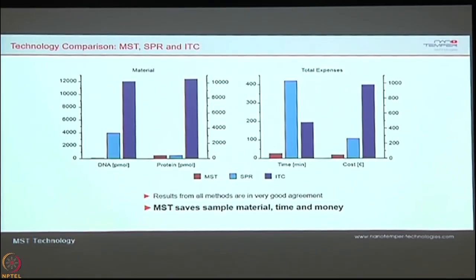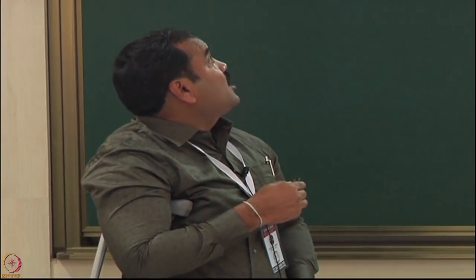The biggest advantage over SPR — where you need a chip, immobilize one protein, pump different buffers and ligands, and invest in method development and cost per assay — and over ITC — which requires higher sample volumes — is that MST uses only lower concentrations of sample. The assay is done in 10 minutes with minimal cost. Glass capillaries are the only consumables, costing 5 euros per assay. To perform one complete KD measurement, you need just 5 euros — that is the biggest advantage in terms of smaller volumes, time, and overall cost.